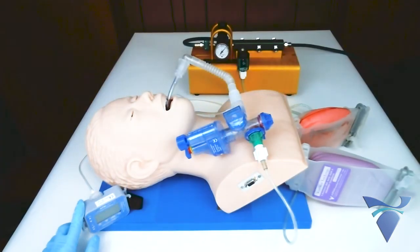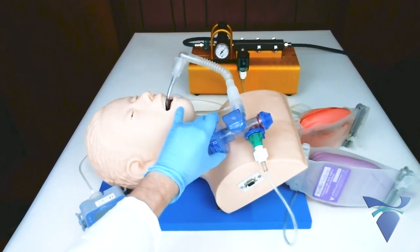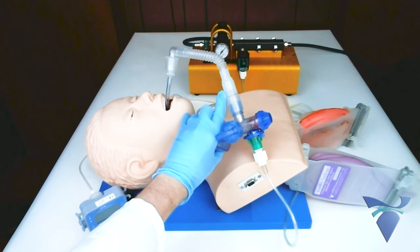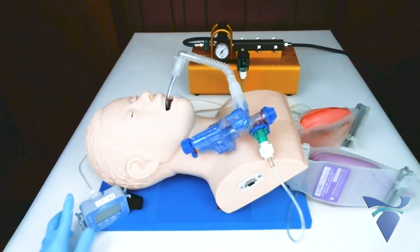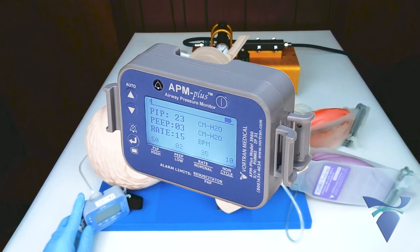Lastly is the Vortran APM Plus, an airway pressure monitor. The APM Plus is connected between the GoToVent and endotracheal tube and will provide real-time monitoring for PIP, PEEP, breath rate, inspiratory time, and IE ratio.